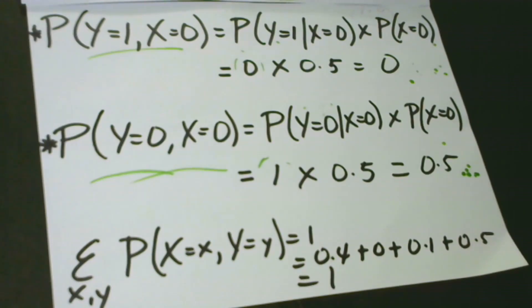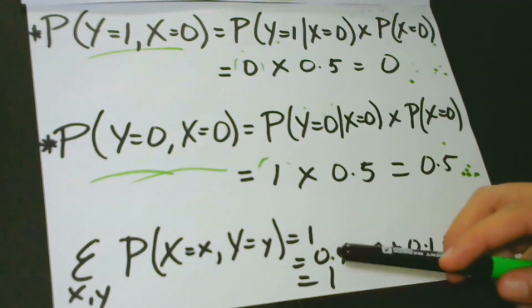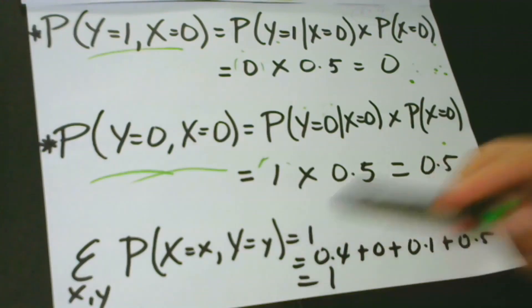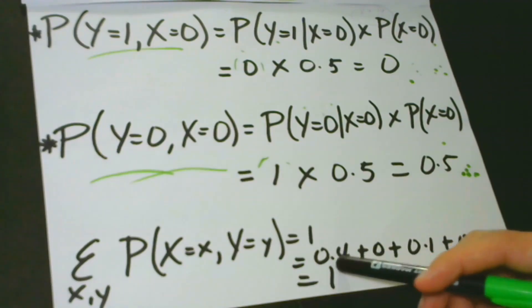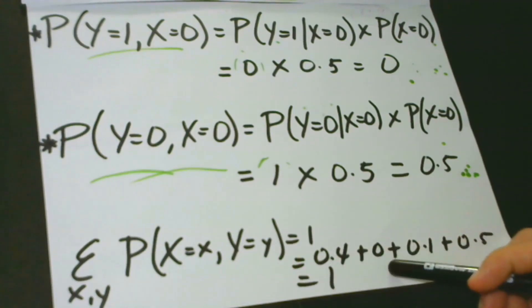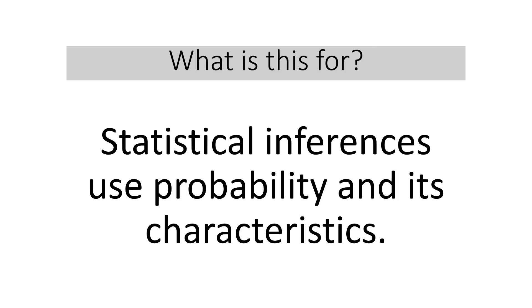Using our equation, if we sum the probabilities of all four of these events, we should get one. Just to check if all of these things are really correct, we are going to prove our solutions. Adding 0.4 to 0, then 0.1 to 0.5, we get one. Therefore, we have proven that our solutions are correct.